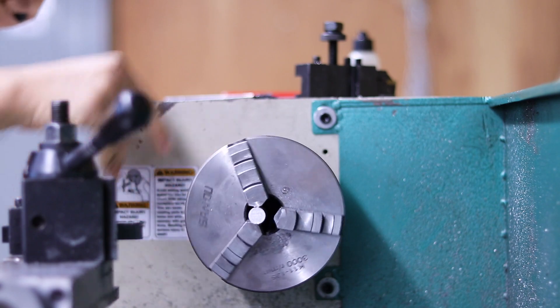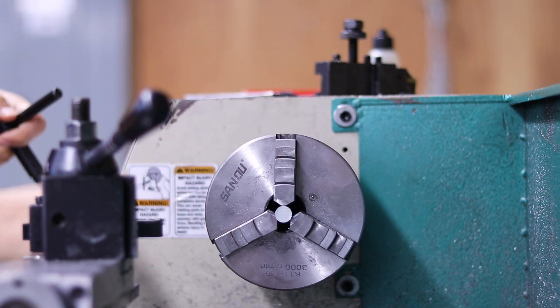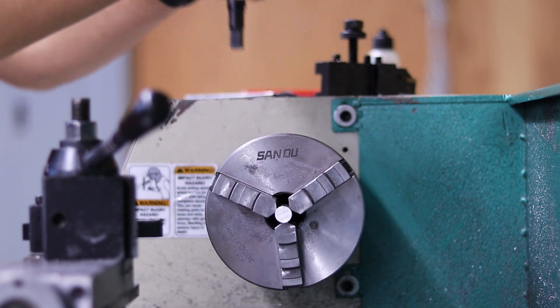We'll verify that the part is centered by spinning the chuck with our hands. If the part looks like this, it's obviously not centered, so we'll have to try again. If our part looks like this, we're good. We tighten the jaw in the other two locations, and we're good to go.